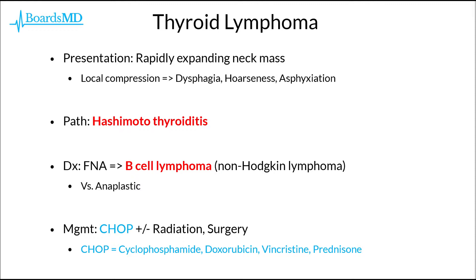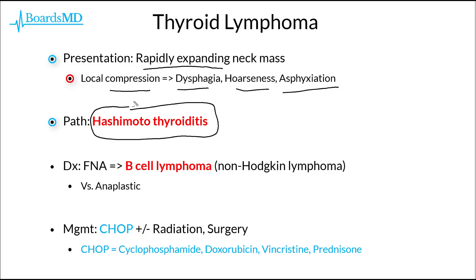Last but not least, we have thyroid lymphoma, which, much like anaplastic carcinoma of the thyroid, is going to present with a rapidly expanding neck mass. Because this neck mass is rapidly expanding, this can lead to compression of local structures, leading to dysphagia, hoarseness, and asphyxiation. The underlying pathophysiology of thyroid lymphoma, especially for examinations, is long-term Hashimoto thyroiditis — patients may have Hashimoto thyroiditis over the course of decades prior to developing lymphoma of the thyroid. This lymphoma, in most cases on FNA, is going to be a B-cell lymphoma, which is a non-Hodgkin lymphoma. We can really only distinguish anaplastic carcinoma and thyroid lymphoma based on the histopathology, as both tend to occur in older patients presenting with a rapidly expanding thyroid mass with compression of local structures — anaplastic carcinoma shows poorly differentiated cells staining positive for PAX-8, whereas thyroid lymphoma shows B-cell lymphoma features.